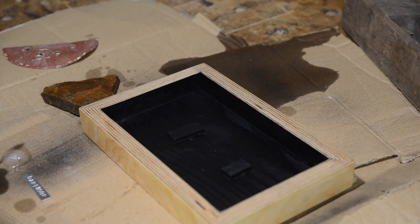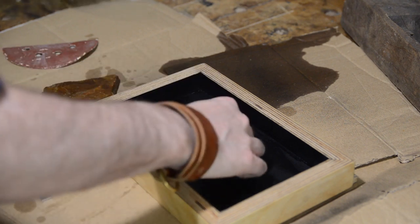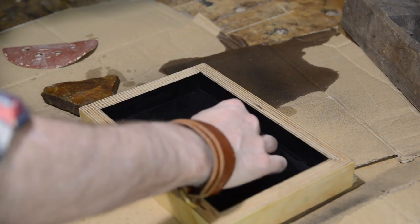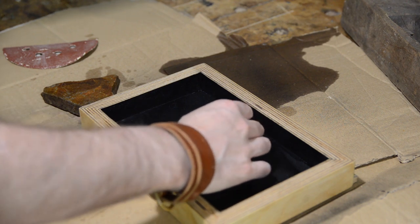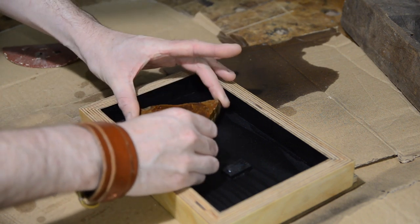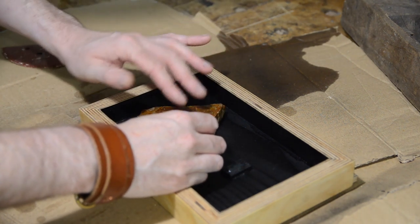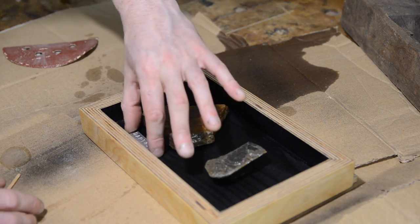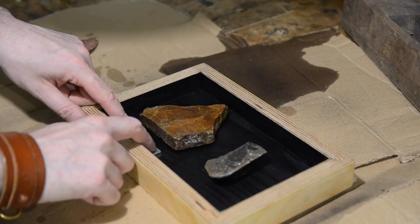Now to get these stones attached so I mix up a batch of epoxy and get some dabs on those little blocks I glued in. I can then get the stones positioned how I want them. I get some epoxy on the back of the little aluminium name plates and get them positioned as well.